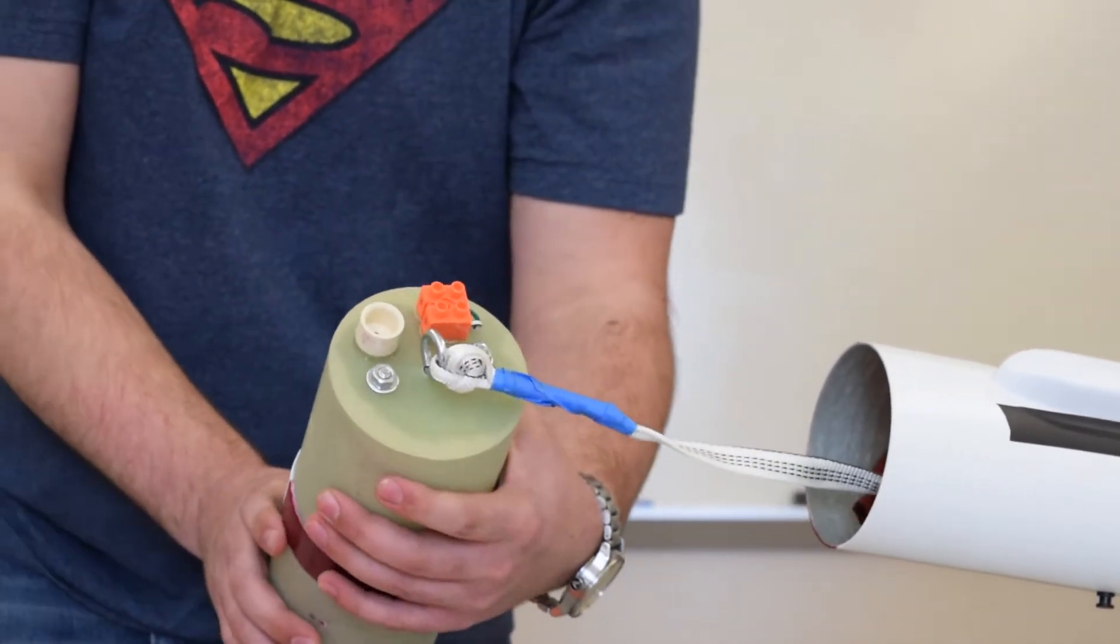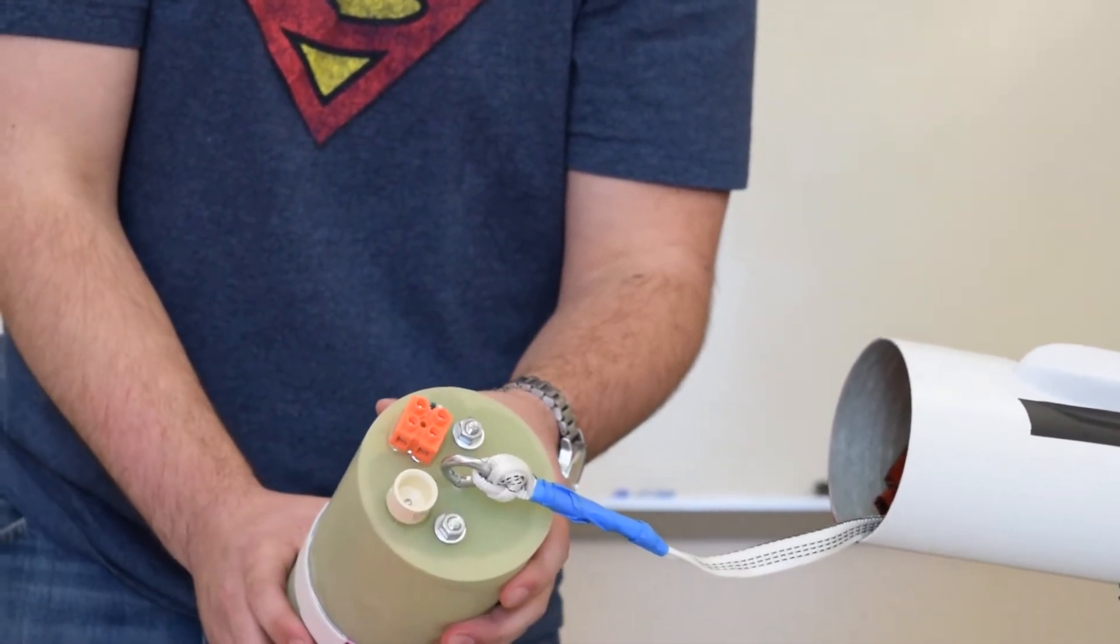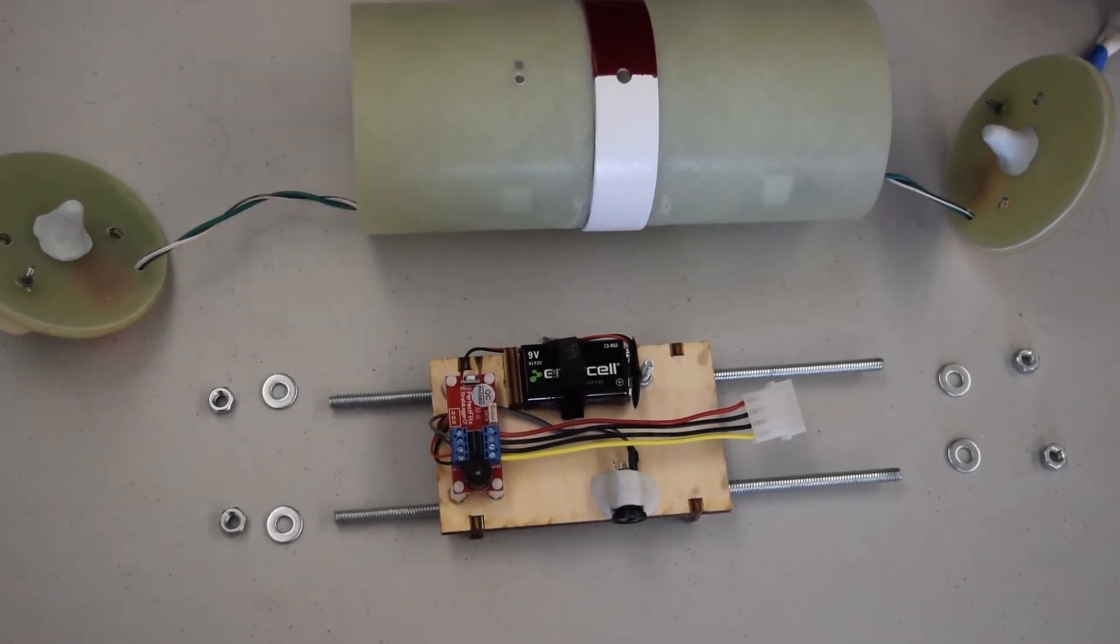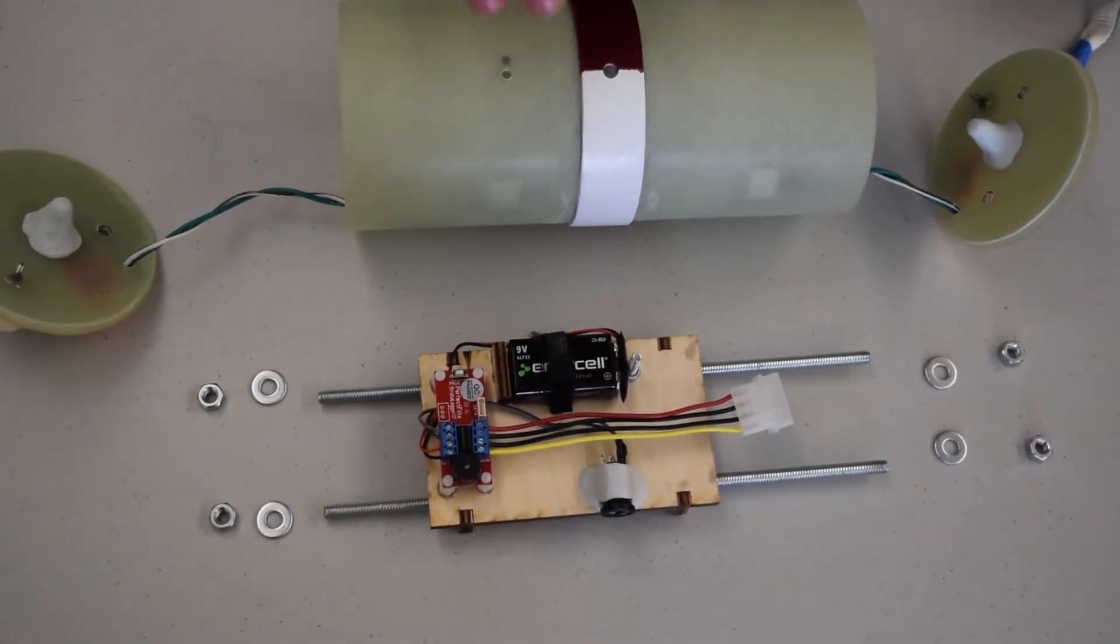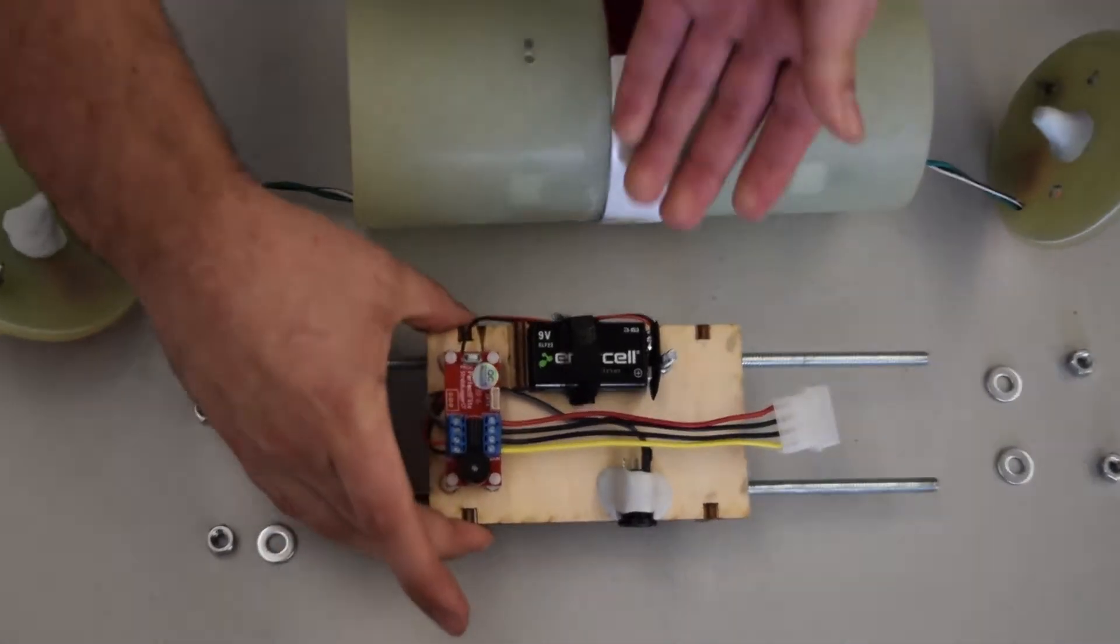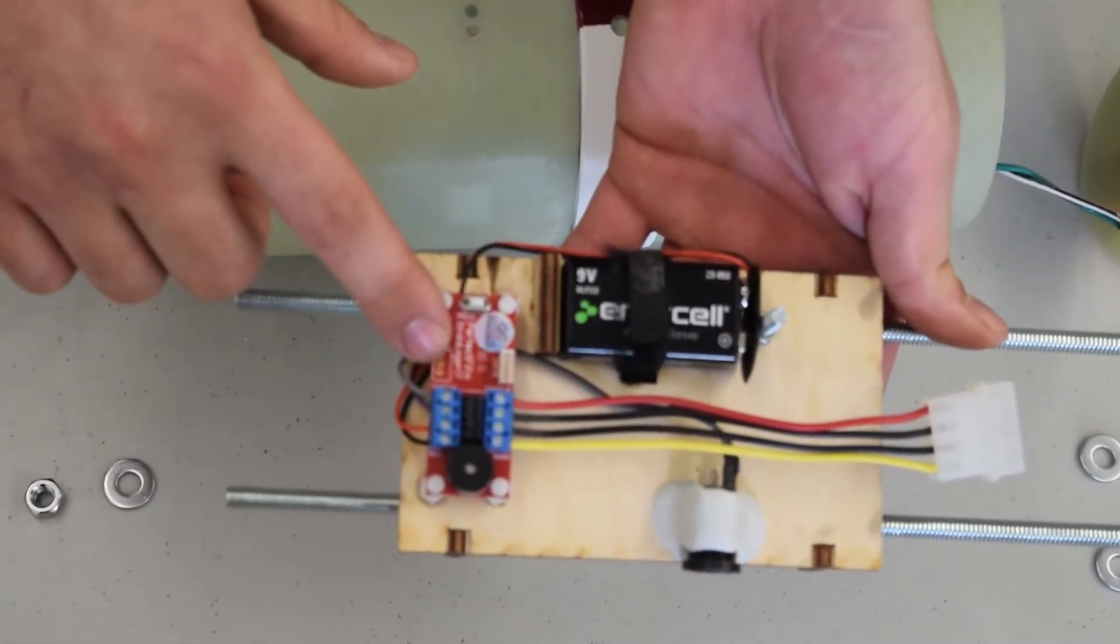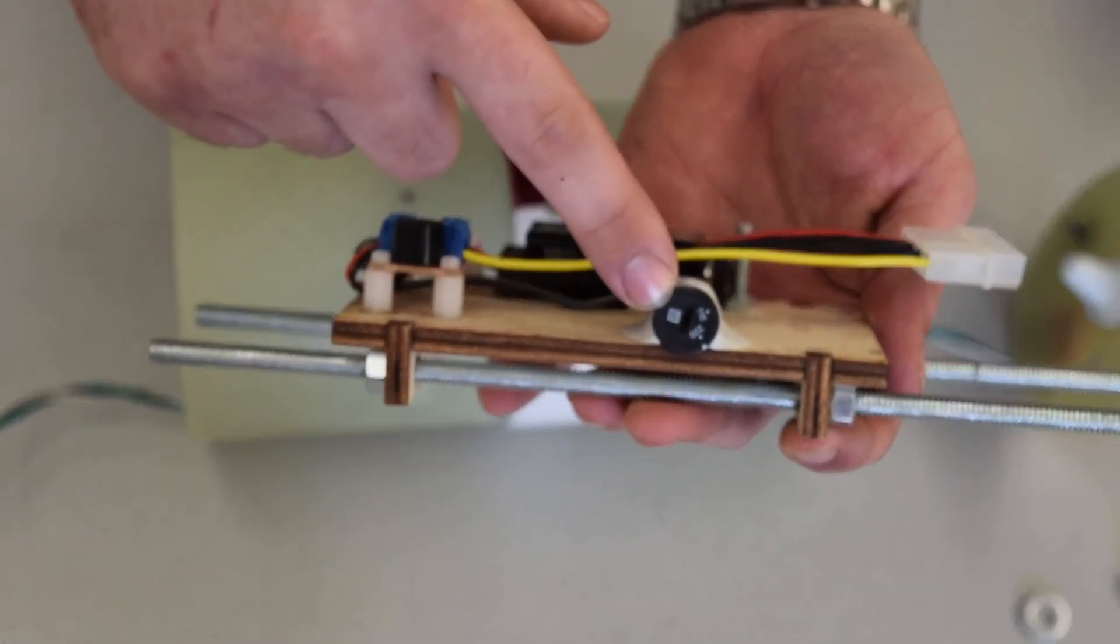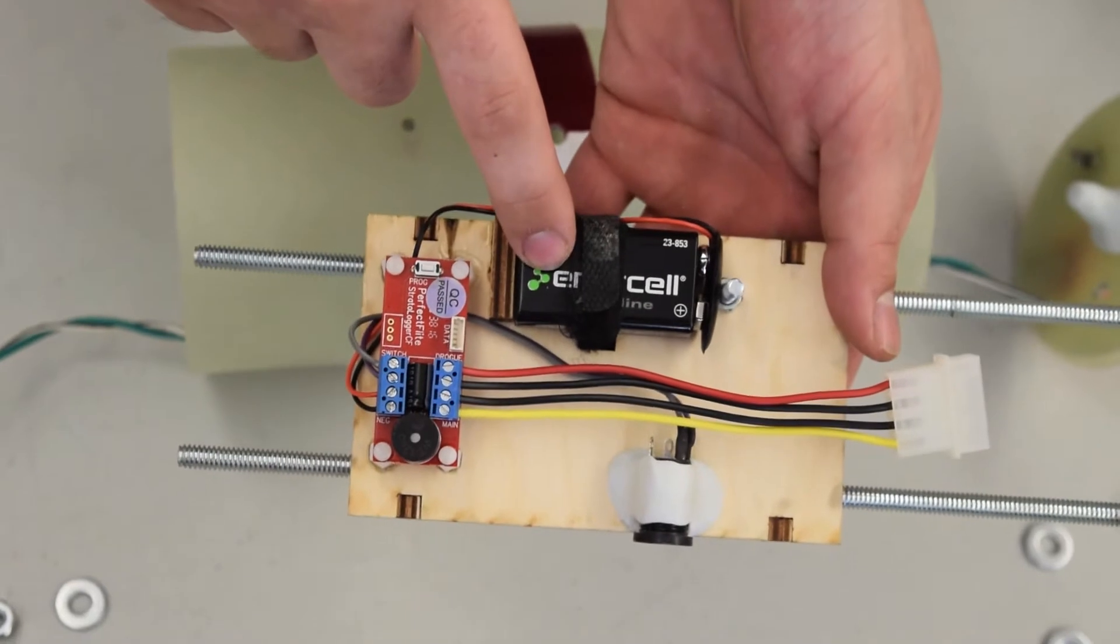And as you notice, it's the same on the other side here. Alright, so now here we have an exploded view of the e-bay. And within the e-bay it's a pretty simple setup. We have our altimeter mounted just right here. Along with that we have a power switch, which is just a simple on-off switch. And a 9 volt battery.